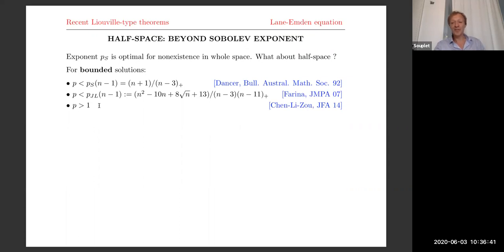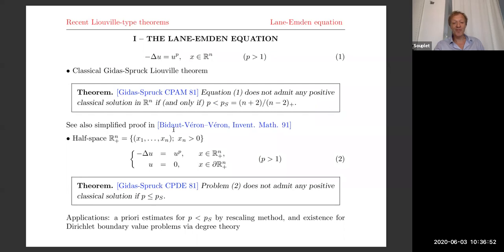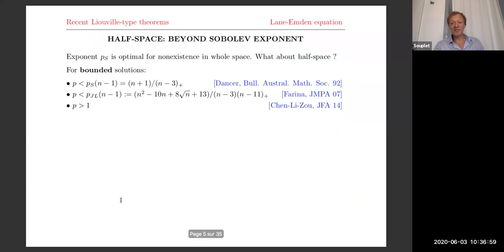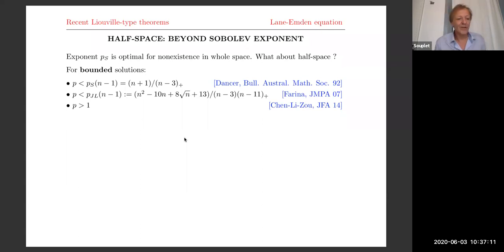Now the question is about possibly unbounded solutions. Let me stress that for applications, it's not so crucial, because in the classical rescaling method we need to combine both whole space and half space results, and we are stuck with the sub-Sobolev exponent anyway. I would say these studies are more for mathematical reasons — for understanding the structure of the problem in depth.